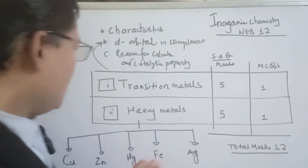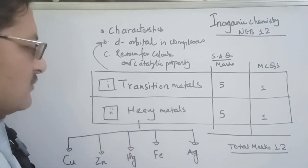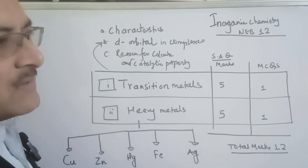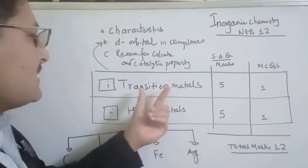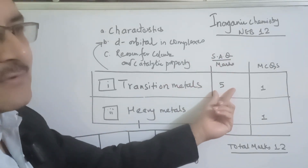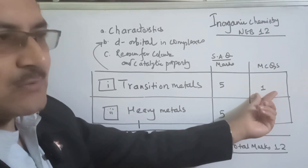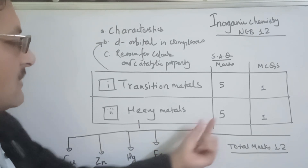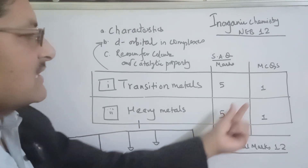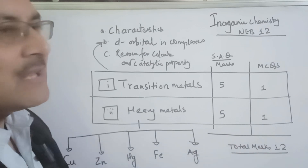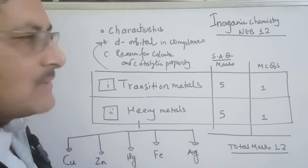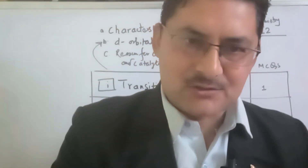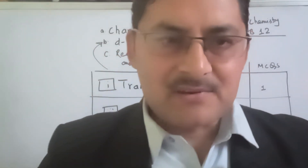I will show you all the materials and short answer questions. Transition metals carry 5 maximum points, and heavy metals carry 6 maximum points. So in total, you can expect around 7 marks from inorganic chemistry in Class 12.